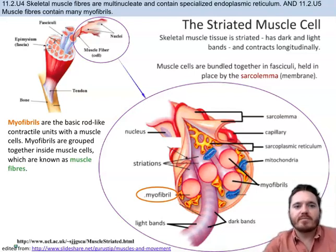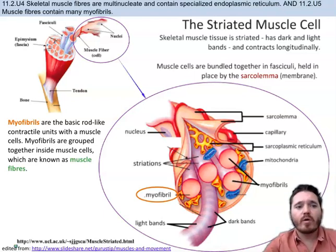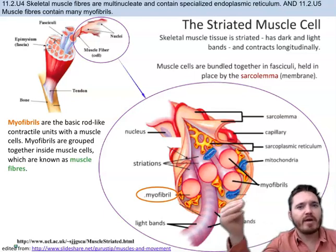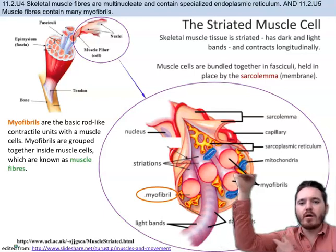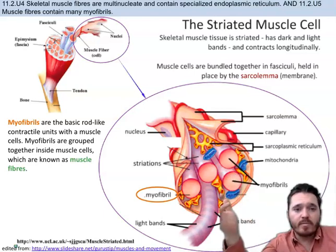Hi everybody, this is Mr. Virk. I'm here with part 2 of 11.2 movement for higher level IB biology. We're about to start diving into what muscles actually are. Before, we had reviewed the general structure of an antagonistic pair of muscles in our arm, our forearm, and our upper arm, and talked about joints a little bit as well.